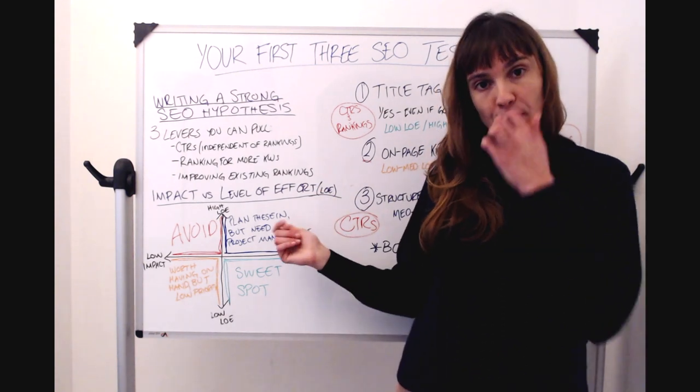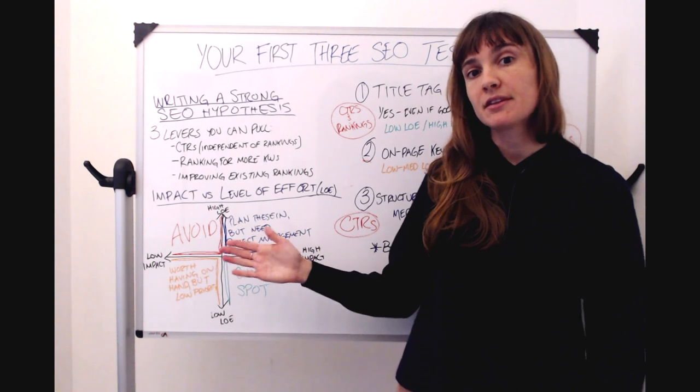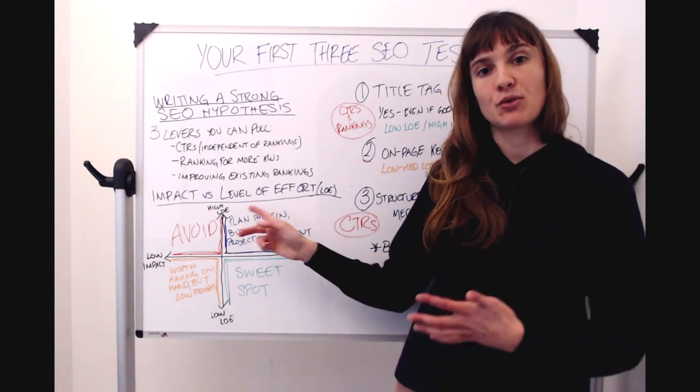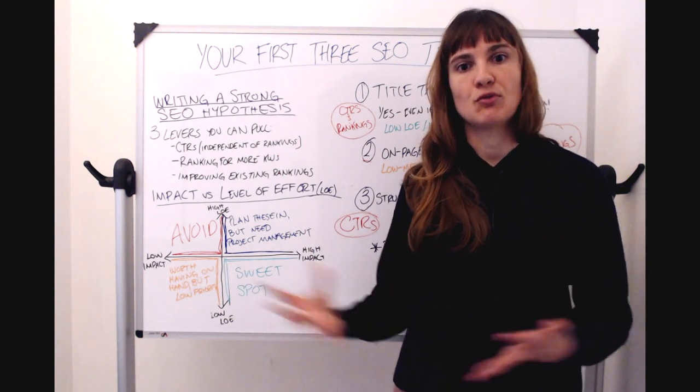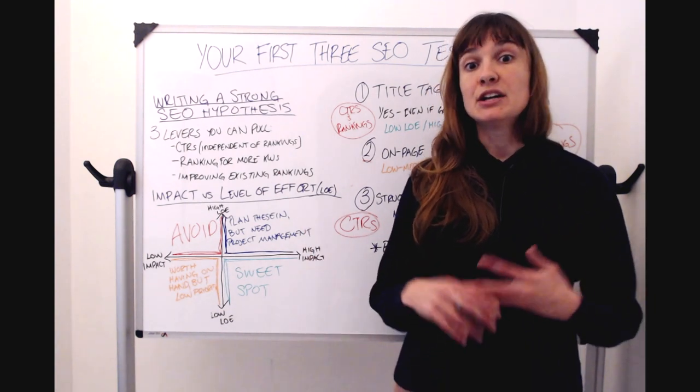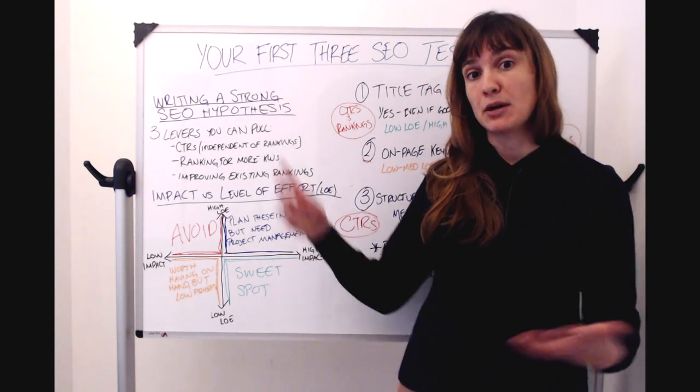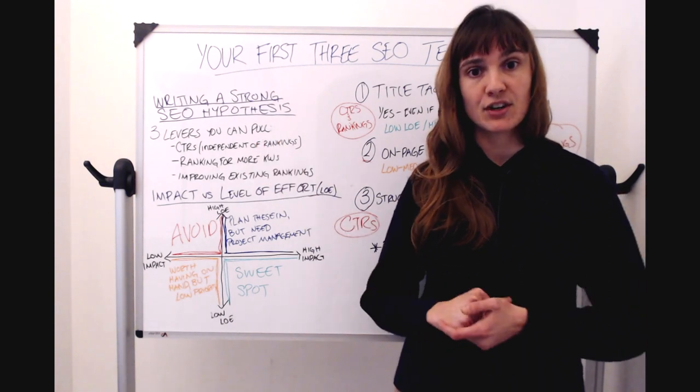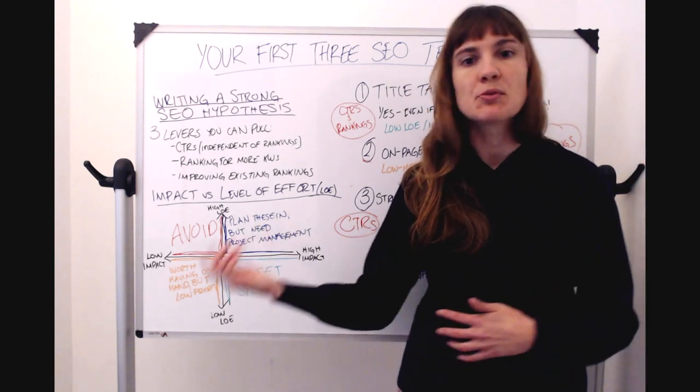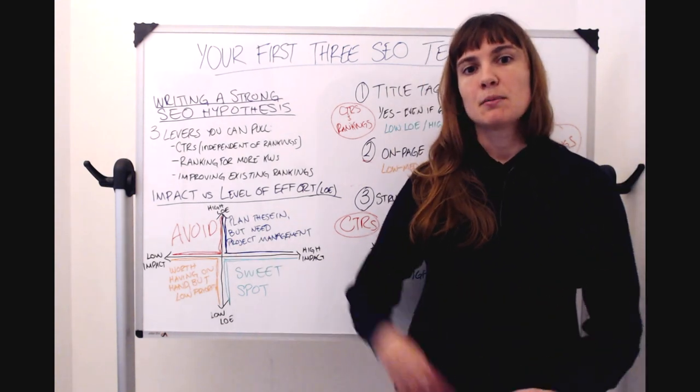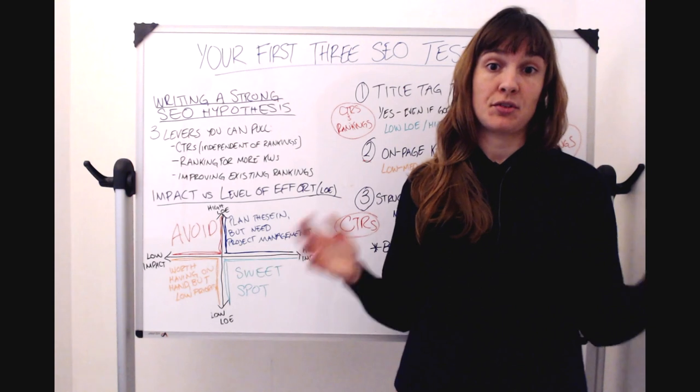Upper right-hand quadrant, we have high level of impact tests or high impact tests that are also high level of effort. So those are things like internal links or anything that's going to involve a lot of engineering support, but you know is going to potentially be a big win. It strongly pulls one of these levers. So you really want to put these in, but they probably require project management. It involves multiple teams working together, that sort of thing. Plan those in later. They shouldn't be your first three tests.